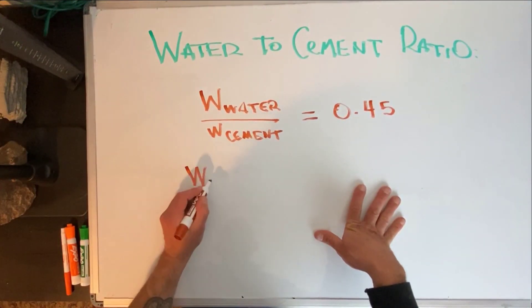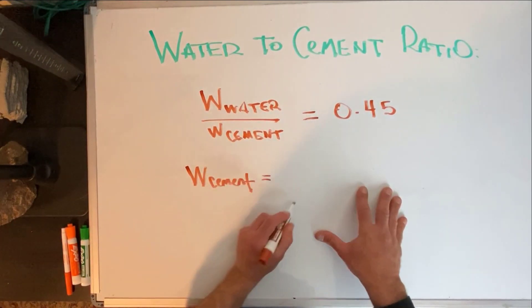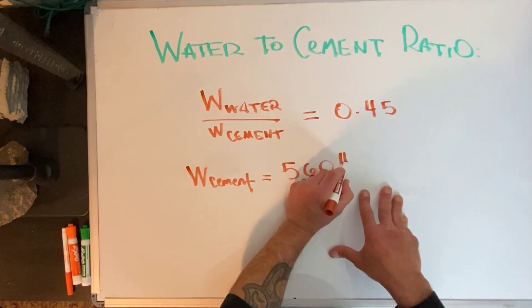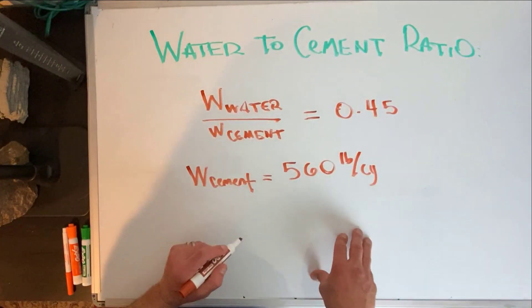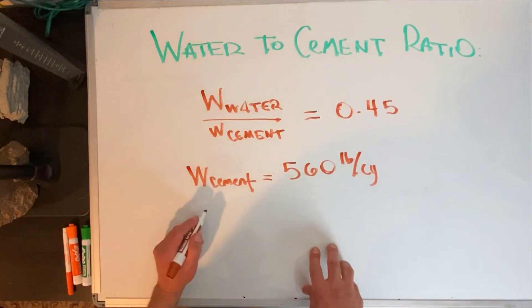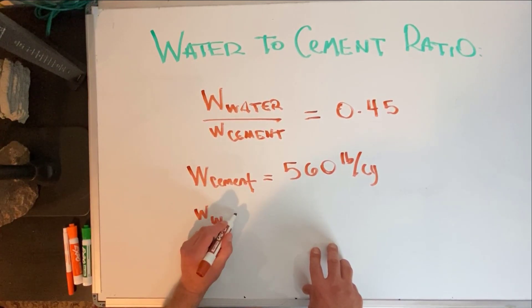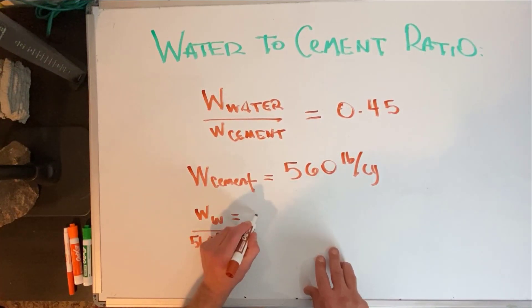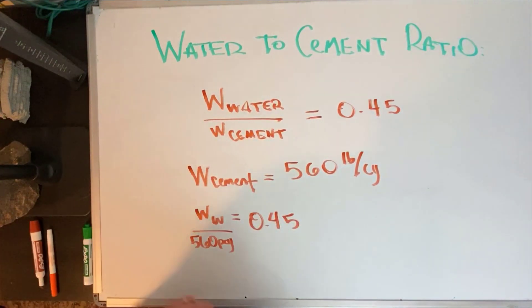That means if my weight of cement equals 560 pounds per cubic yard, to figure out my weight of water, that would take weight of water over my weight of cement, which is 560 pounds per cubic yard, equals 0.45.